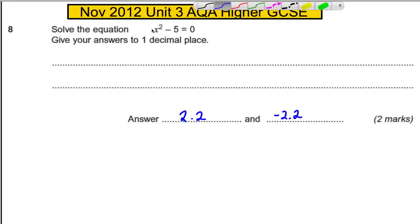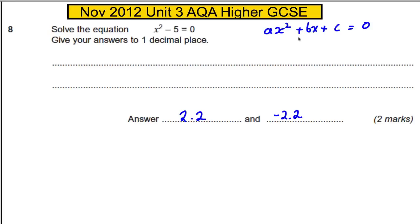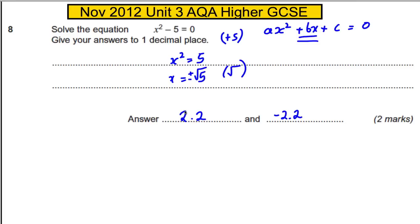Another way — only usable in this case because there is no x term — is to rearrange directly. The general quadratic has a b term, but here b is 0. So we add 5 to both sides to get x² = 5, then square root both sides, remembering to take both positive and negative roots: x = ±√5. This method only works when you have x² and a number with no x term.